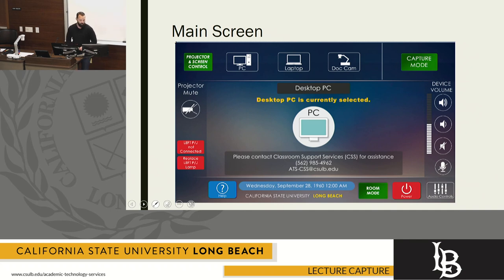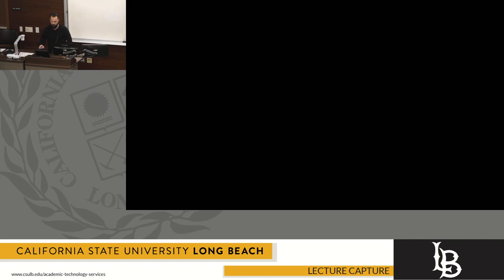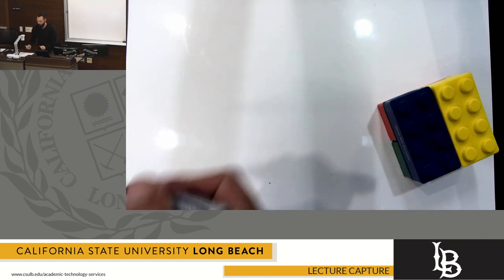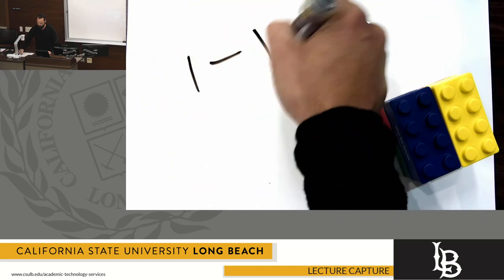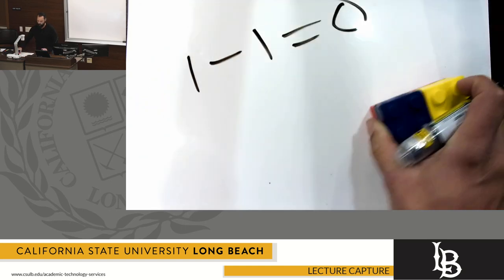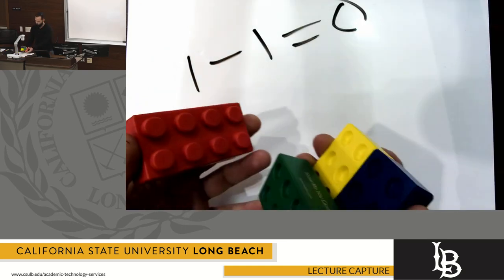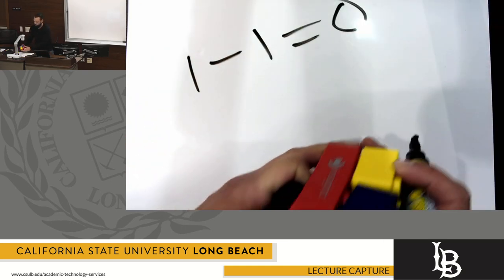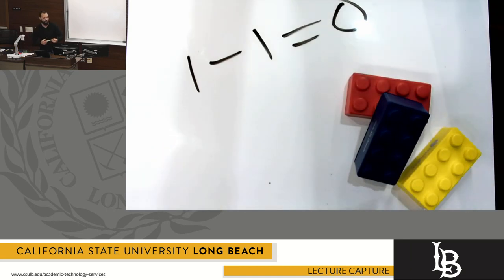I'm currently using the built-in PC, however I would like to demo the document camera. I do that by pushing the document camera button on the screen. This is a great place to be able to write different things, show your class 3D objects. It's also projected using the in-room projector.